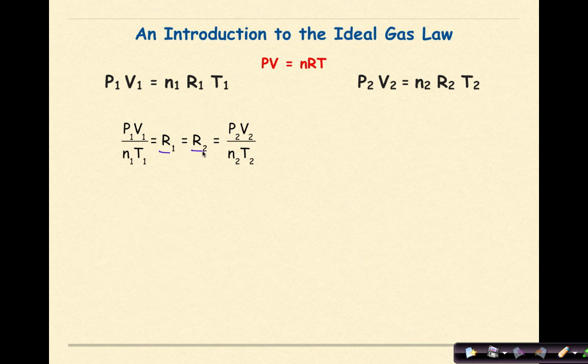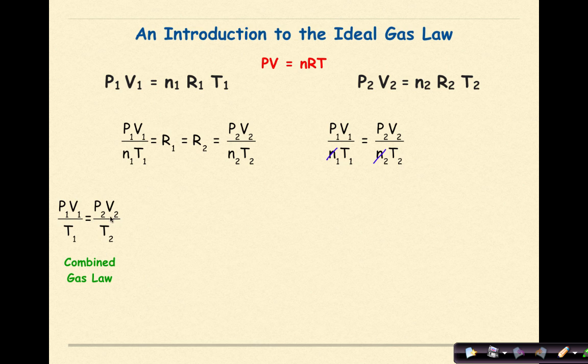And if R1 is equal to R2, we can take this a step further and cancel these Rs because all the units are going to be the same, and make P1 V1 over n1 T1 equal to P2 V2 over n2 T2. Now as we do this, we can derive different gas laws. Let's say that we have a situation where we're holding the number of moles of gas constant. If we hold the number of moles of gas constant and we remove the ends, all of a sudden we have the combined gas law.